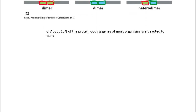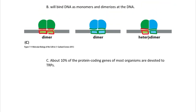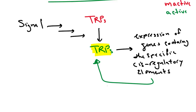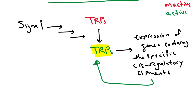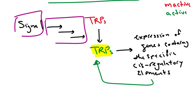About 10% of the protein-coding genes of most organisms are devoted to TRPs. We're discussing this because it connects to signal transduction: a signal comes into the cell, leads to TRP activation, and that leads to gene expression as one type of cellular response. This ensures that when we start talking about signal transduction pathways, we understand what TRPs and transcription factors are.